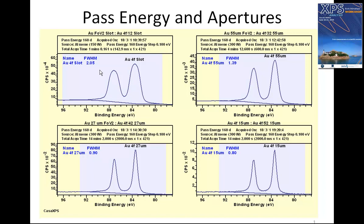If we use a full slot aperture, then the full width half maximum is about 2 eV. However, if we use a 15 micron aperture, which is significantly narrower than the slot aperture, then the full width half maximum is 0.8. So despite having a common underlying line shape, we need to understand how an instrument is changing the shape of the peaks so that we can do a proper analysis in terms of chemical state that is due to the sample and not due to artifacts of the measurement process itself.